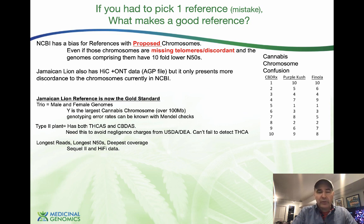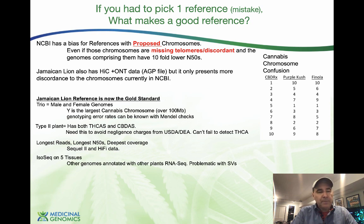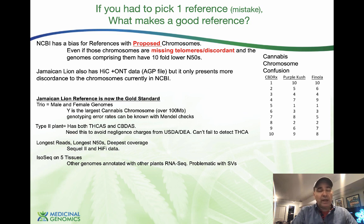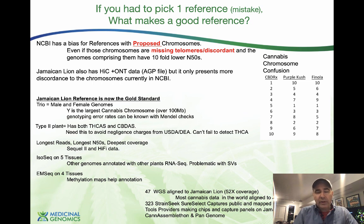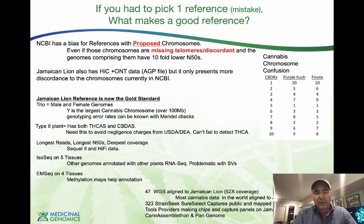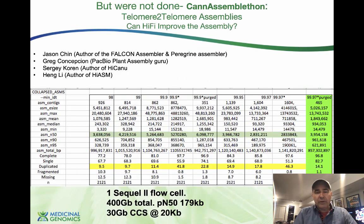You want the longest reads, most recent chemistry, and deepest coverage — we have that with SEQUEL 2 and HiFi data, and we're the only ones who've done a cannabis genome on HiFi data. You also want RNA annotation from the same genome you assembled. You want methylation information, and more cannabis data is mapped to Jamaican Lion than any other cultivar — 47 whole-genome shotguns in the Koji Genome Browser with BAM files, over 50 strain-seeks loaded, with another 300 on the way. There's a full trio in Koji for anyone to work with.